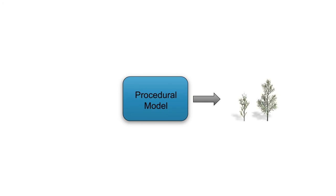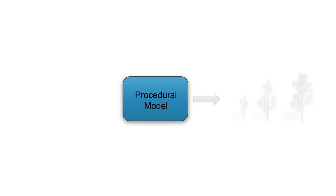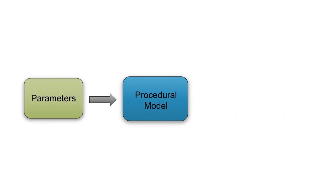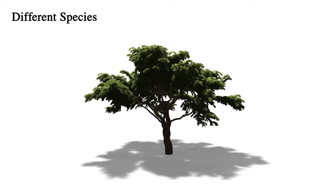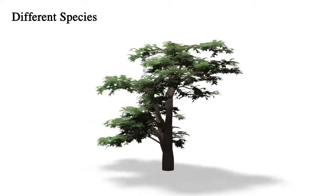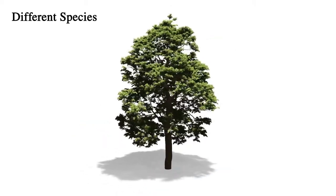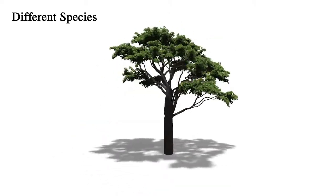One way to create many different trees interacting with their environment is to use a developmental model that simulates the tree growth. We use a developmental model controlled by a wide range of input parameters that control the growth process. By changing the parameters, our model allows us to generate a large variety of trees from different species.